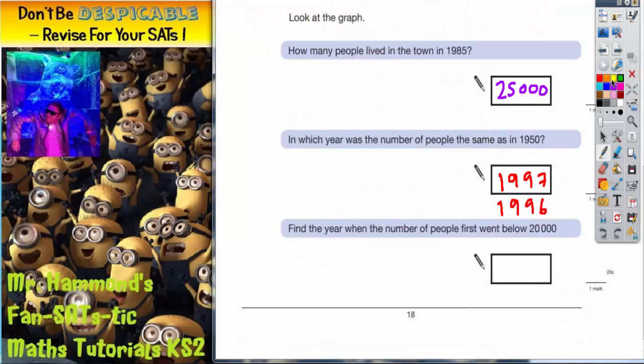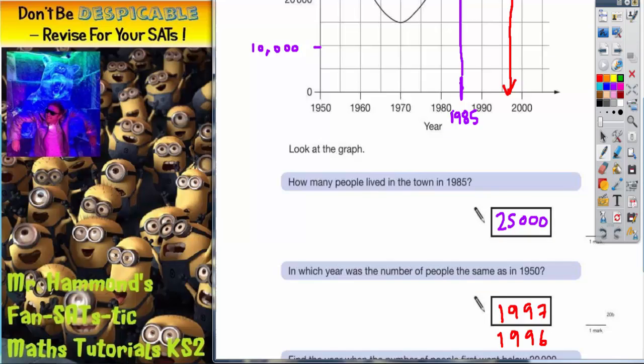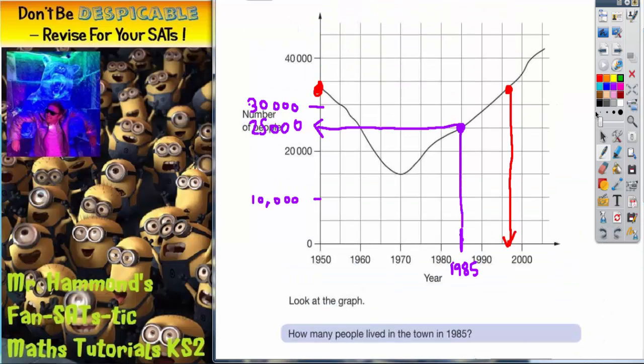The final part of this question. Find a year when the number of people first went below 20,000. So 20,000. So here's 20,000. So the first year, there's the entire line at 20,000.